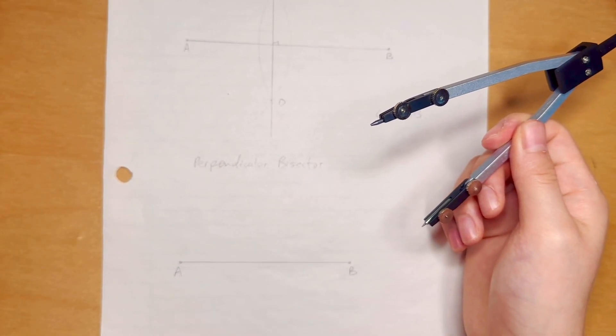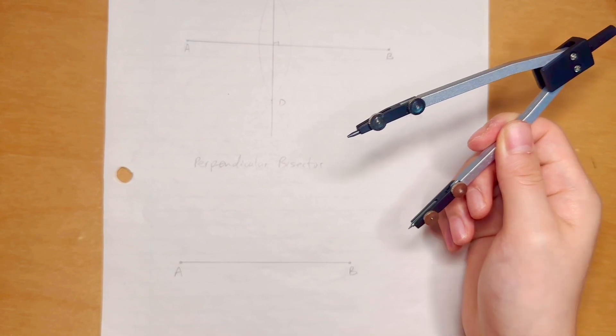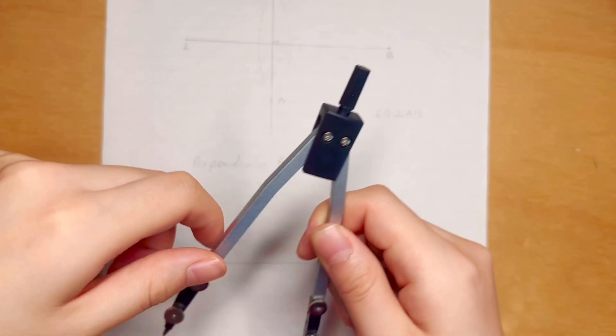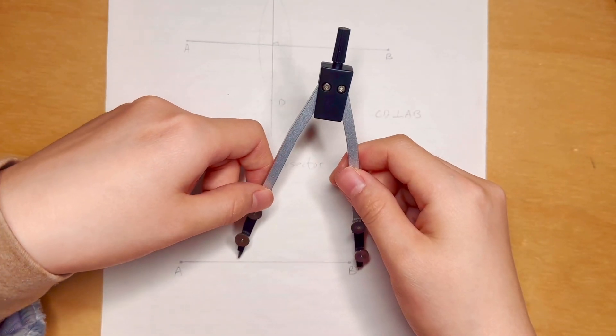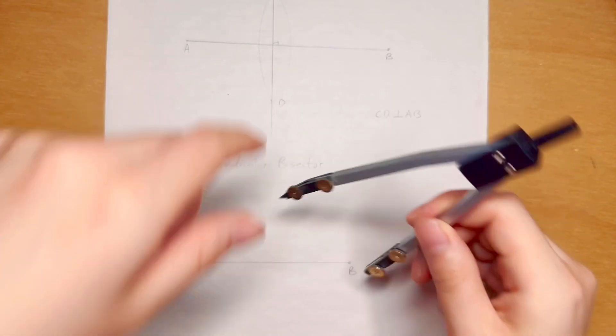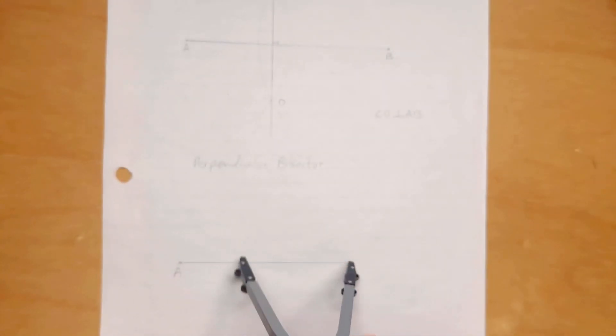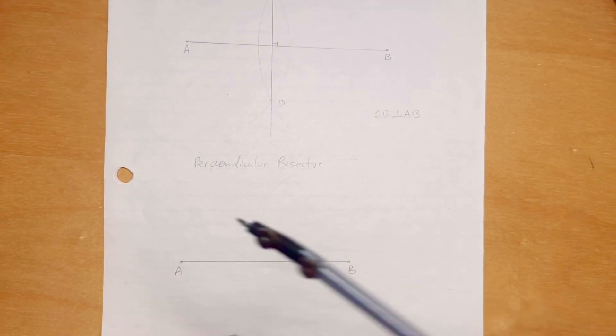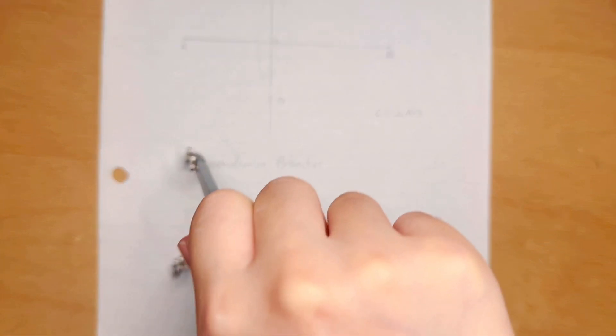So let's set it like this, or maybe smaller like that, and then we center the circle at B. So we first draw something like this, and then we center it at A, and then we draw another arc.